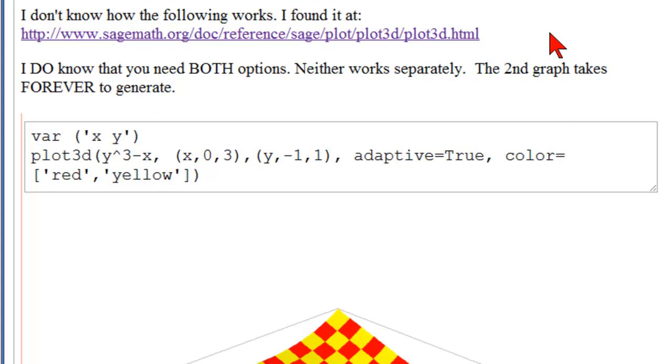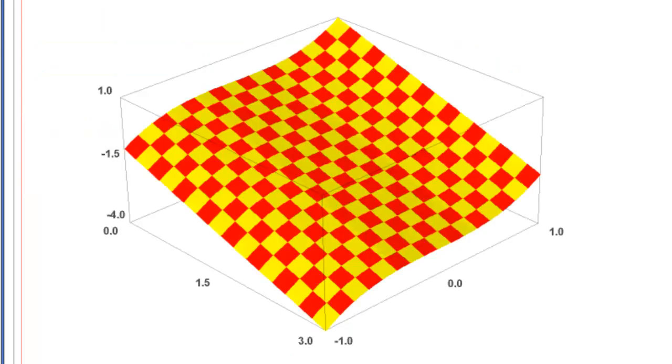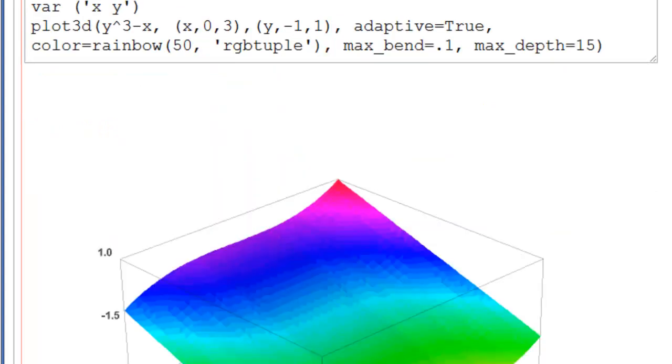Now, I don't know how the following works. I found it at this reference. I do know you need both options. So you need adaptive equal to true and color equal to something like red, yellow. It's fun to try different things, so go ahead and try it, but you do need both the option adaptive and the option color. And notice the brackets here and the quotation marks. And this is what you get, which is pretty cool.